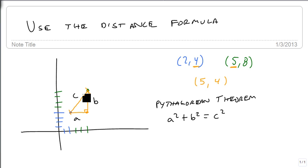So we're trying to find the c. Well, what's a? Notice that it's just this length from here to here. And since the y is the same, it's just the difference in the x's. So it's 5 minus 2, and that's a. B is the difference in the y's, so it's 8 minus 4.